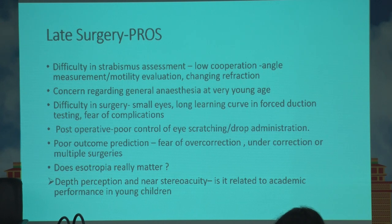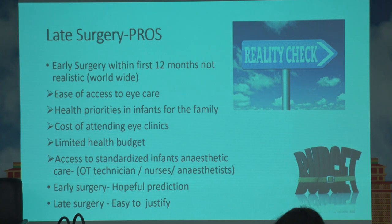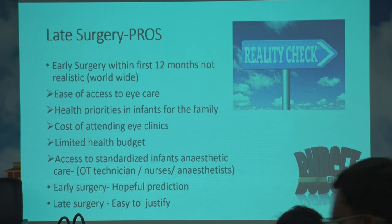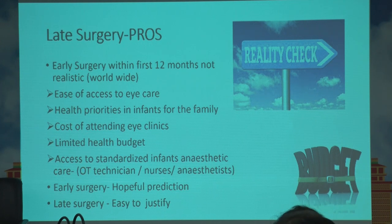Although gross stereopsis may develop, fine stereopsis — even with early surgery as early as around 10 months of age — may not reach the level of a normal child. So does the lack of very good near stereopsis actually make a difference if we operate early? Worldwide, most children do not report to us at the time when early surgery can be done. In a country like ours, most children come very late — either through pediatricians who are dismissing the condition as something the child will grow out of, or because pseudo-esotropia is being confused with true esotropia.